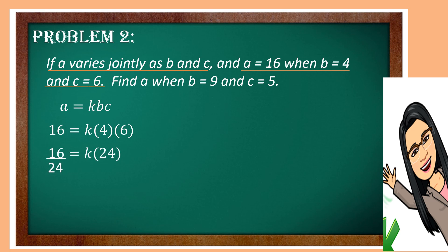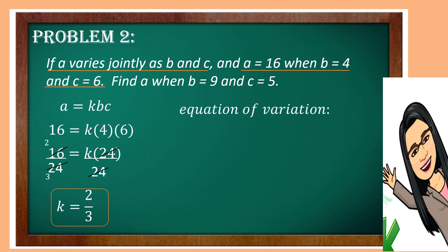Then divide both sides by 24. 24 over 24 is 1 times K, which is K. Then 16 over 24 can be simplified by dividing both numerator and denominator by 8. So 16 divided by 8 is 2, and 24 divided by 8 is 3. So K is equal to 2 thirds. Now the equation of variation is A is equal to 2 thirds times B times C.